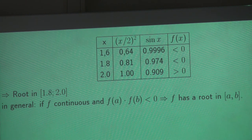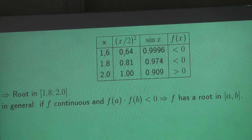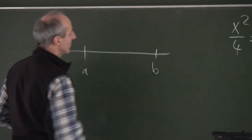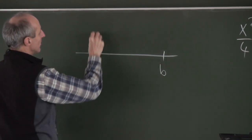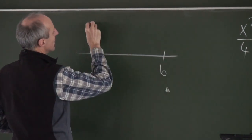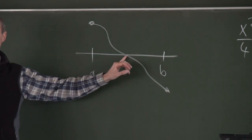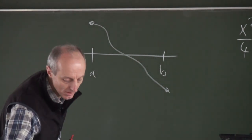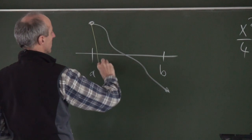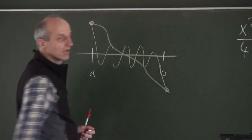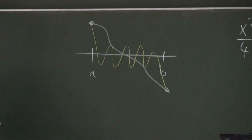Why is this the case? If this product is negative, then either f of a or f of b has to be negative and the other one positive. The picture looks like that: f is positive here and negative here, and there must be at least one root in the interval. But the picture may also look like that, and then we have many roots in the interval.